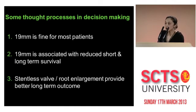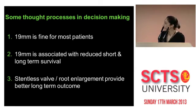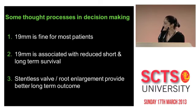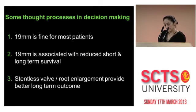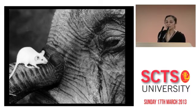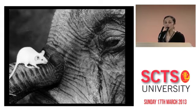Probably some of the thought processes going through your mind include that a 19 millimeter tissue valve for this patient is fine for most patients of her characteristics. But others probably think that a 19 millimeter associated would reduce short- and long-term survival. And some of you probably think that a stentless valve and root enlargement provide better long-term outcome. In the next few slides, I'd like to discuss some of the literature on patient prosthesis mismatch and the evidence for and against the decisions made for this patient.